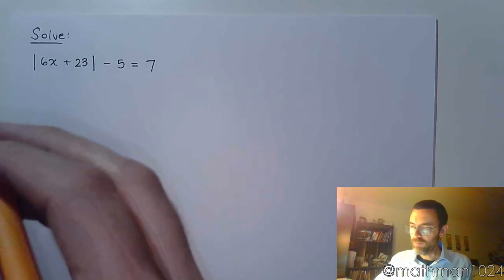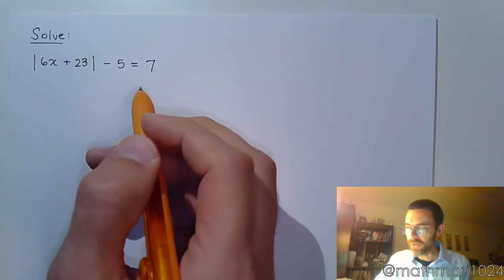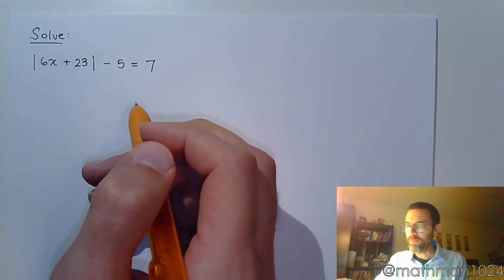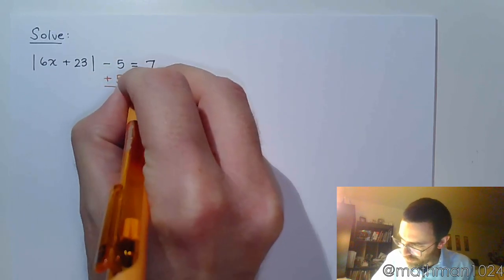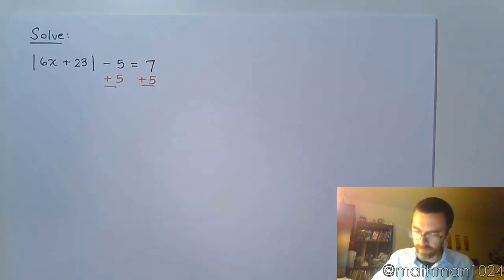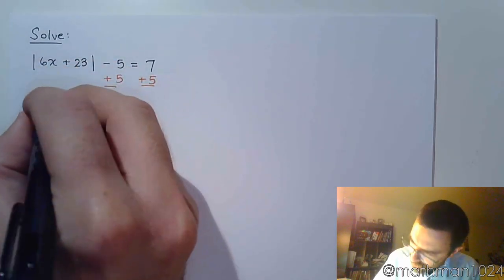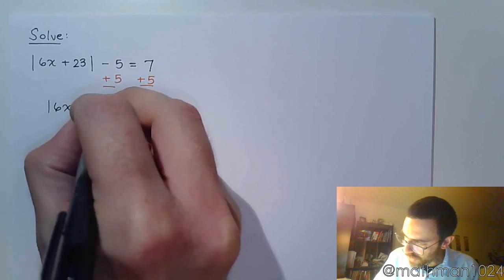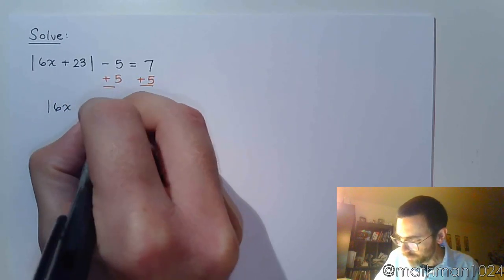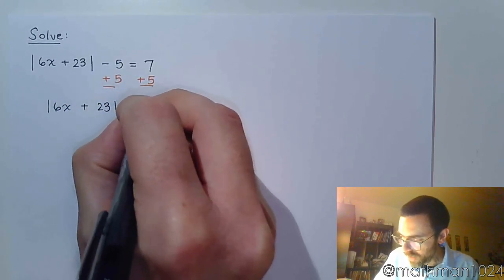Starting with this one. You have the absolute value minus 5 equals 7. Well, the best thing to do is go ahead and add 5 and move it to the other side. And now we get the absolute value completely by itself. The absolute value of 6x plus 23 is equal to 12.